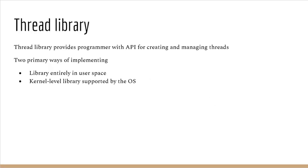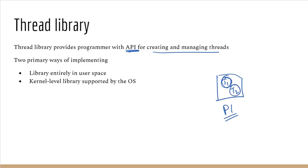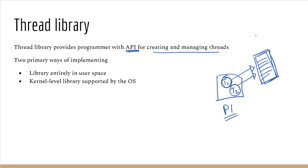The first thing to talk about is the thread library. A thread library provides the programmer with an API for creating and managing threads. For example, to create a thread or manage a thread, all those functions are provided by an API — that API is called the thread library.